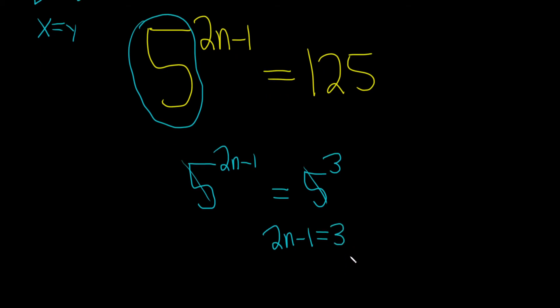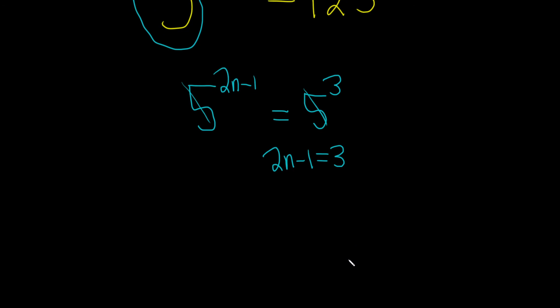Okay, we're almost there, we just have to find n. So we'll start by adding this 1, so plus 1, plus 1. So we get 2n equals 4.